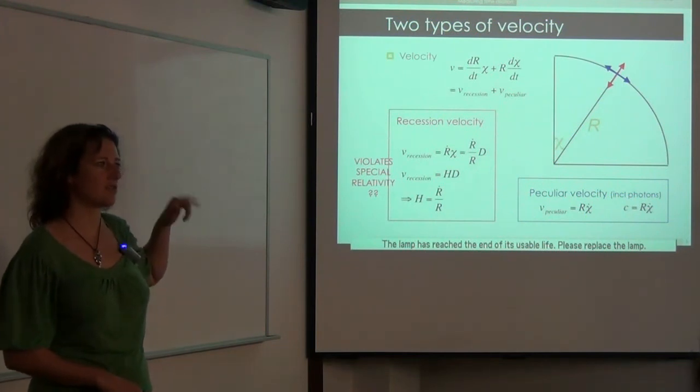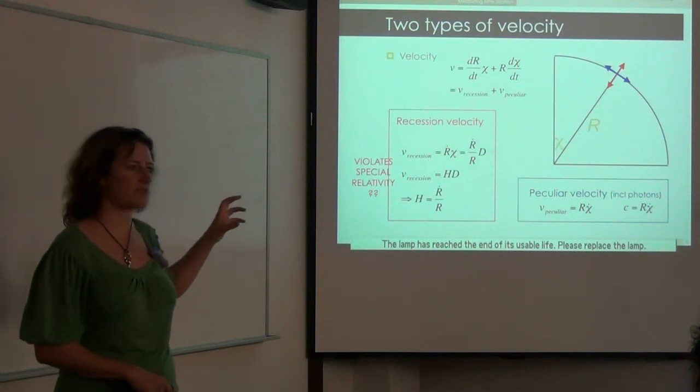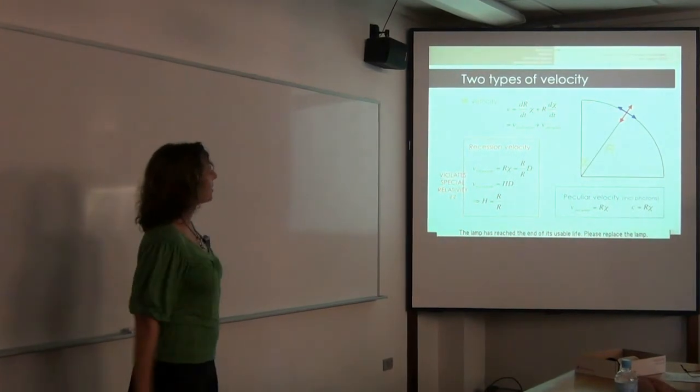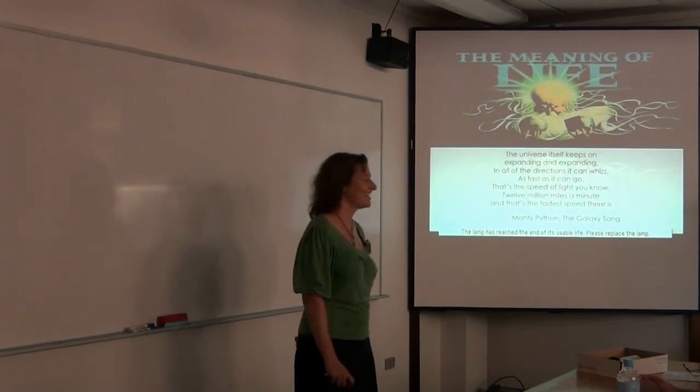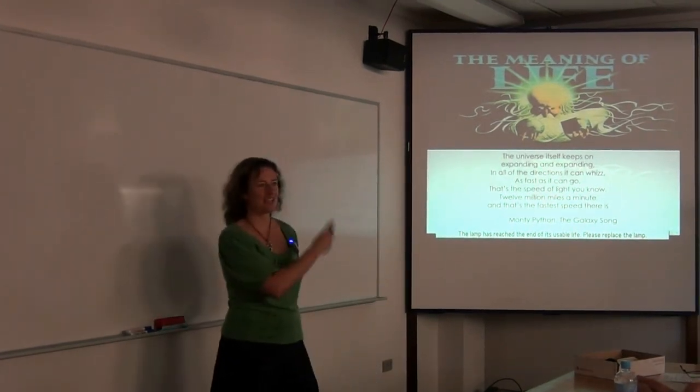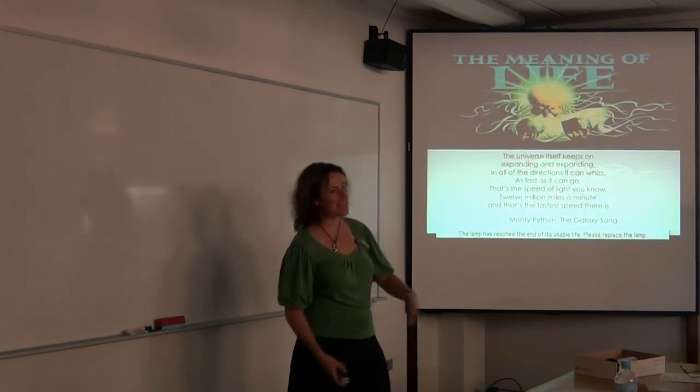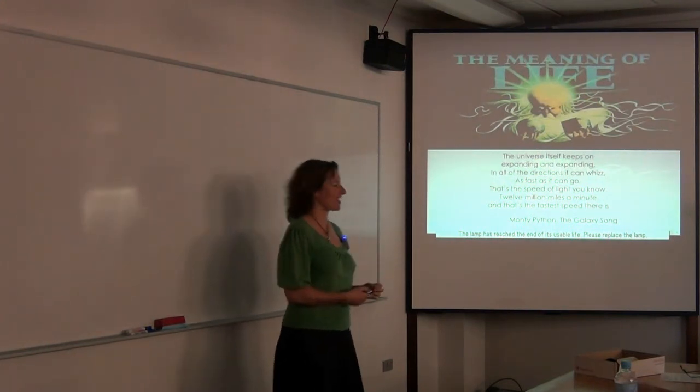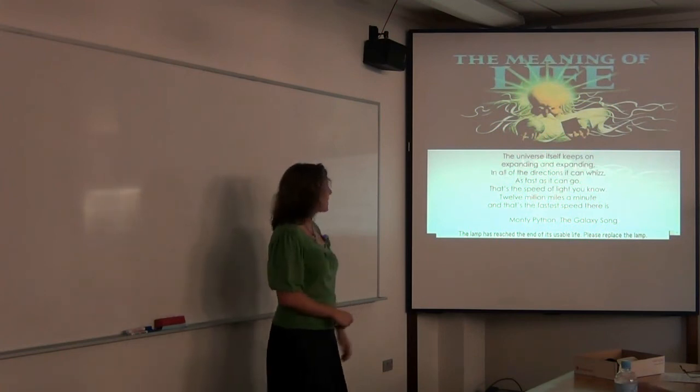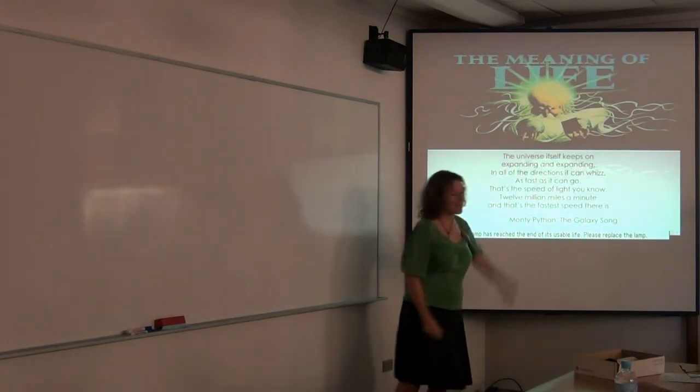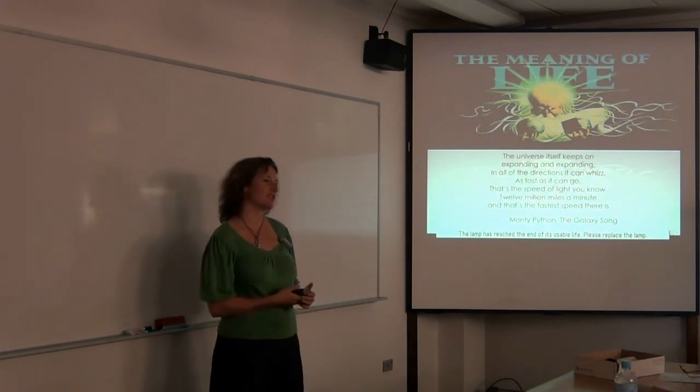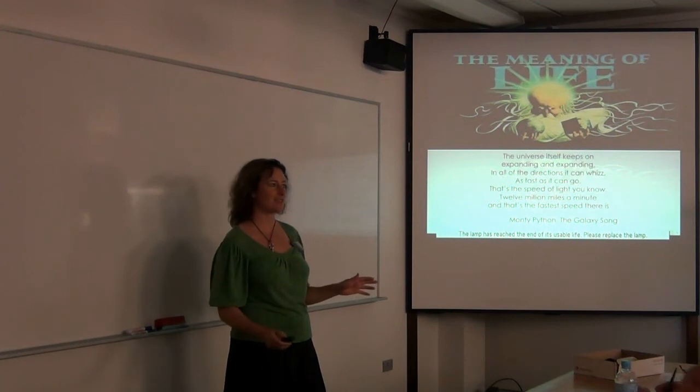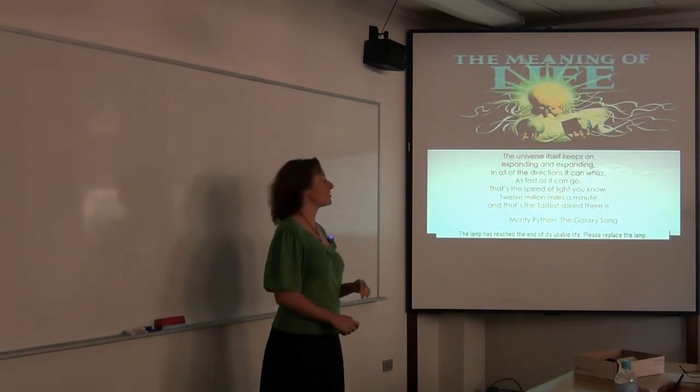Well, when faced with a question like this, I like to go back to the most reliable sources that I possibly can. So for example, you can go back to Monty Python, and they have a song about the expansion of the universe in which this is mentioned. So the song goes like this: the universe itself keeps on expanding and expanding in all of the directions it can whiz, as fast as it can go, that's the speed of light you know, 12 million miles a minute, that's the fastest speed there is. Okay, so I hate to tell you, but Monty Python got something wrong here. This expansion of space is not limited to the speed of light, and you don't need any special relativistic corrections for recession velocities. The recession velocity can perfectly happily go faster than the speed of light. It doesn't violate any relativistic results, and so let me try and explain why.